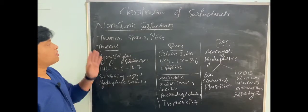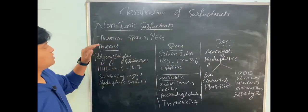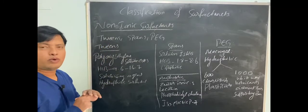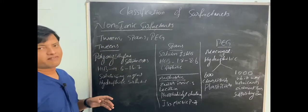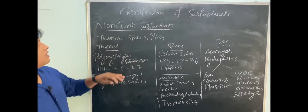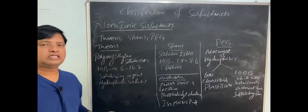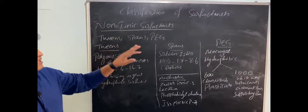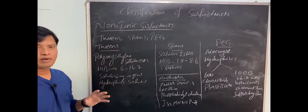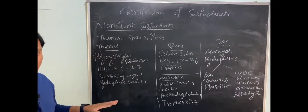Next we are going to study about non-ionic surfactants. In non-ionic surfactants there will be no ion present, hence the name non-ionic surfactants. They are categorized into tweens, spans, and PEGs.